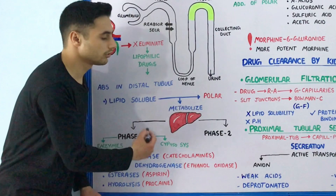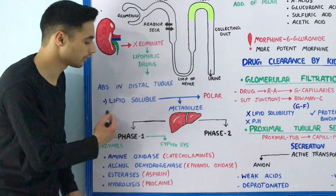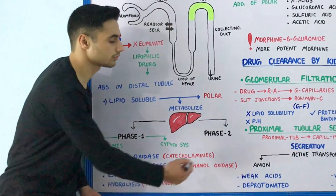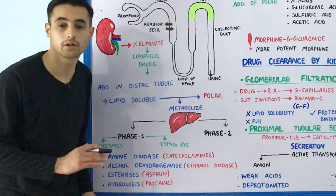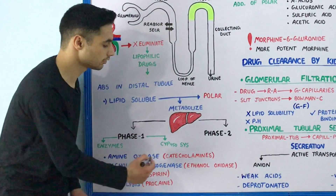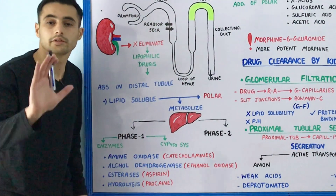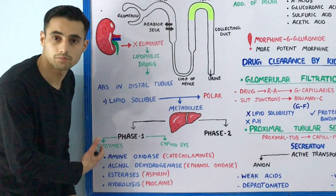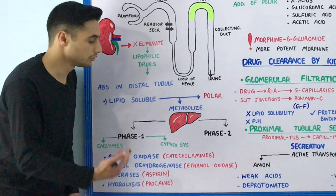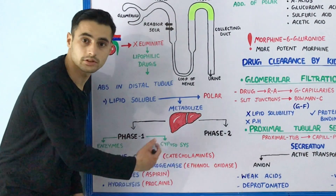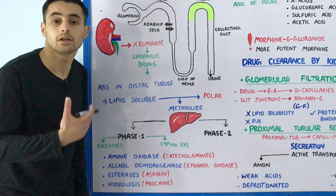Lipid-soluble agents are converted into polar compounds using the liver. The liver performs two functions: phase 1 reactions and phase 2 reactions. In the previous video we covered phase 1 reactions using the cytochrome P450 system. Some drugs use enzymes and some use the cytochrome P450 system to convert themselves into polar compounds for elimination.